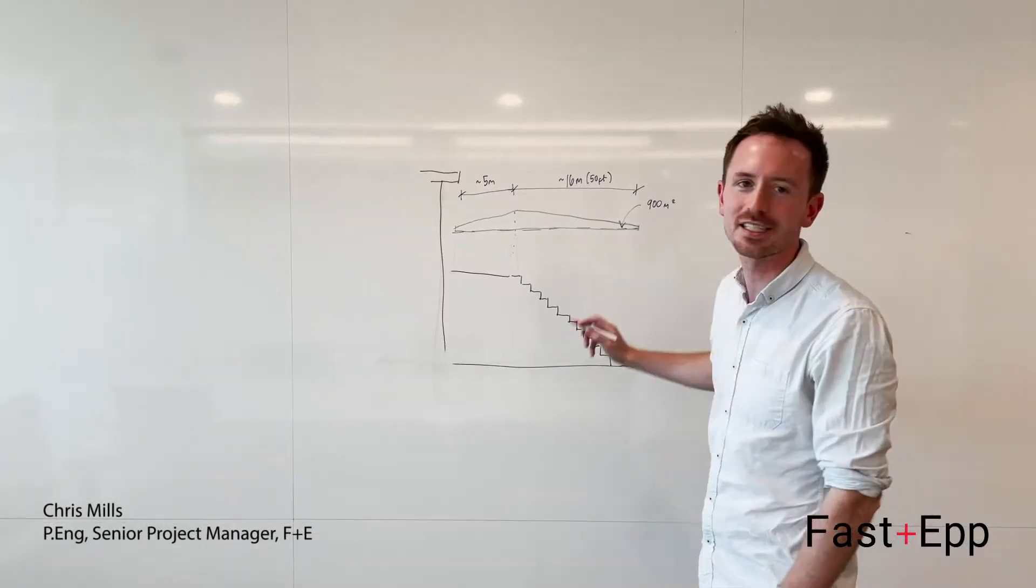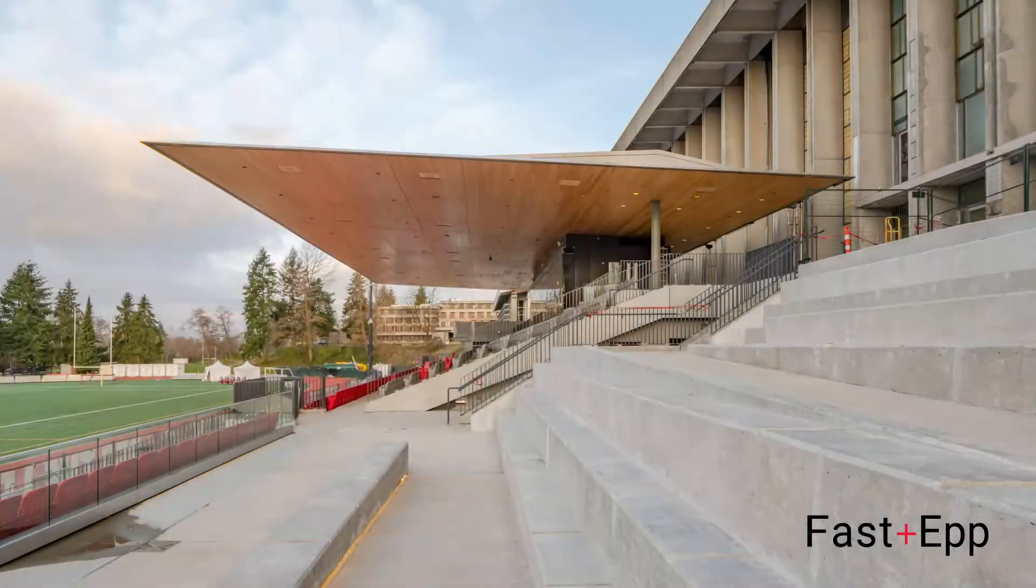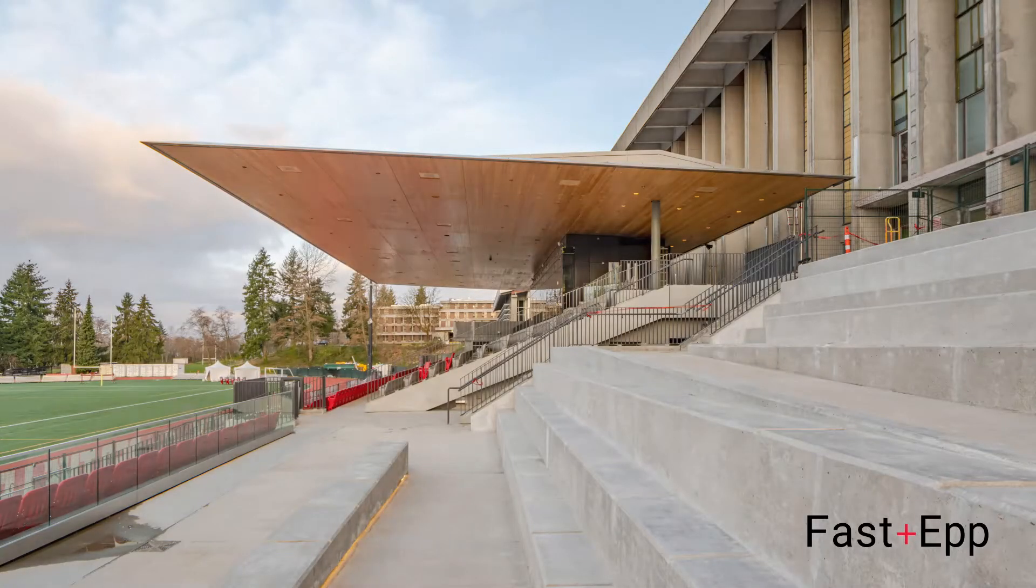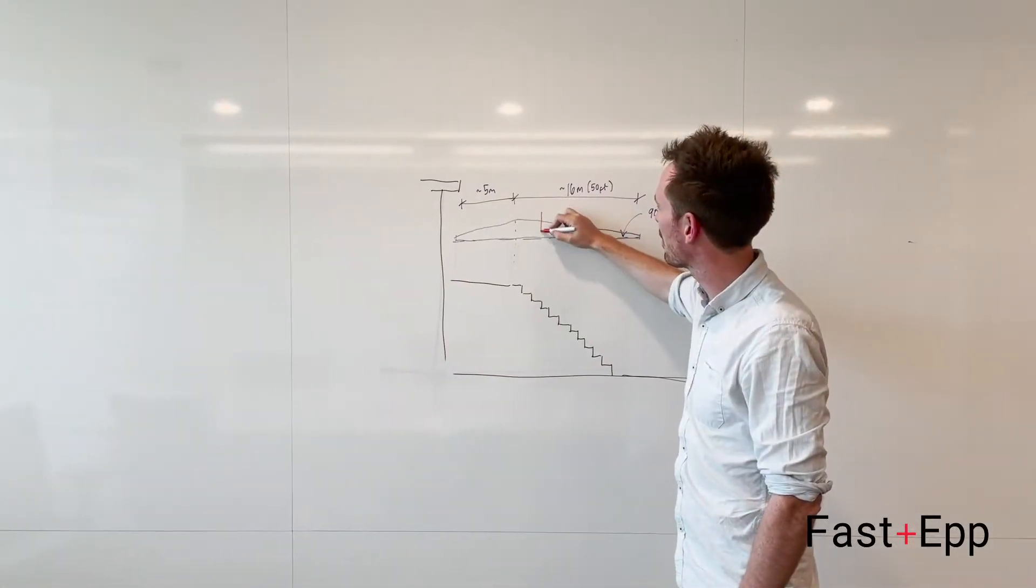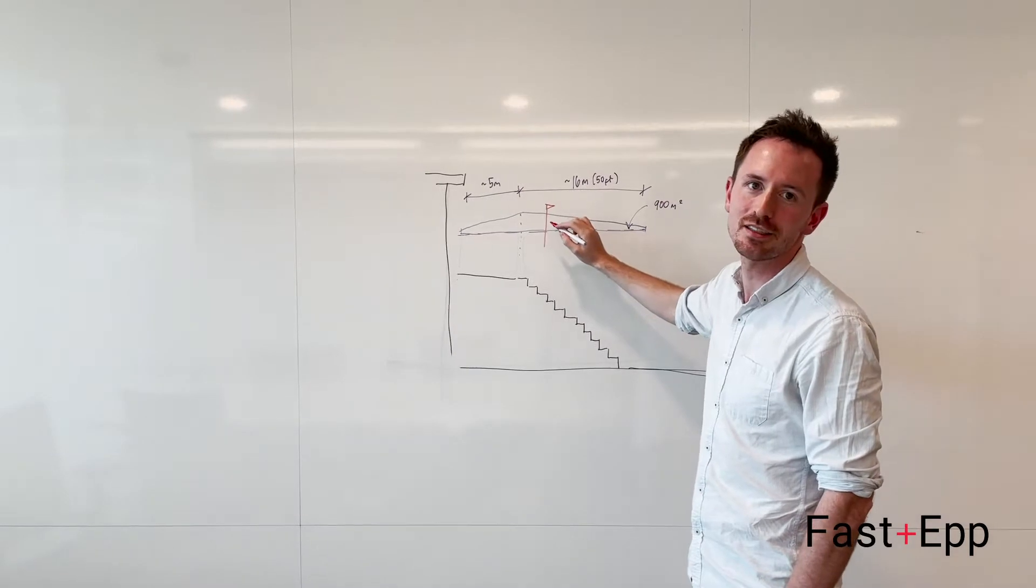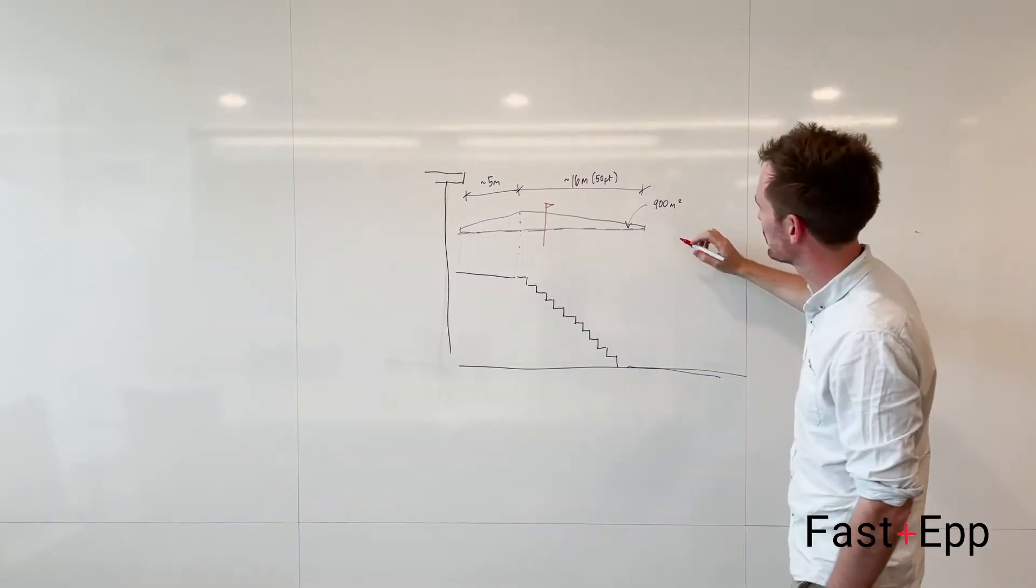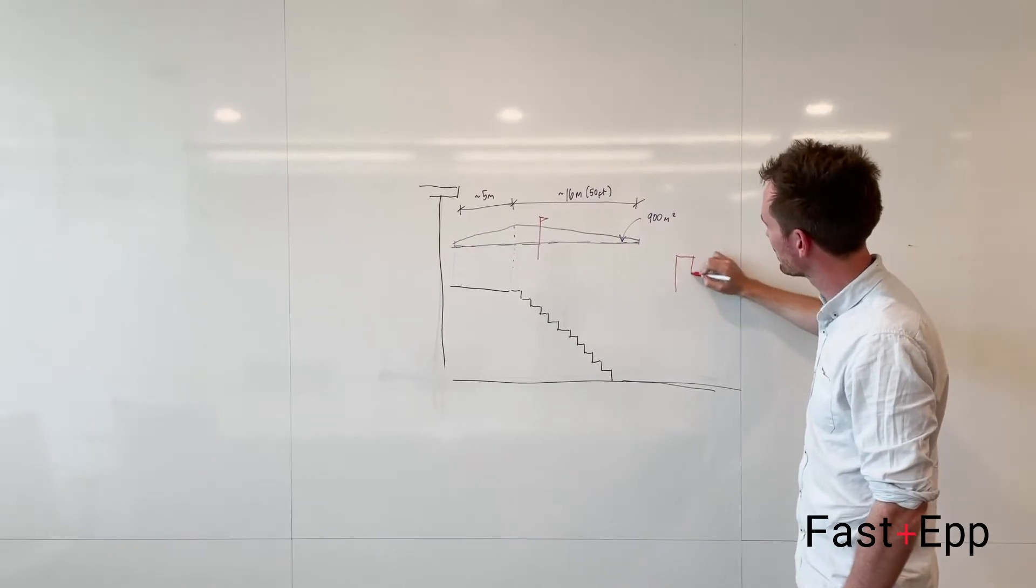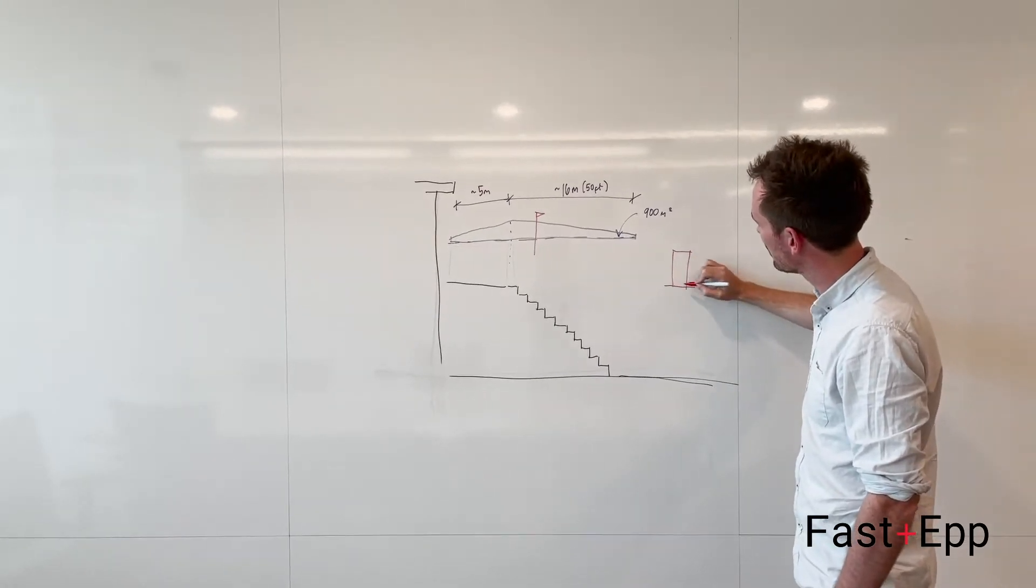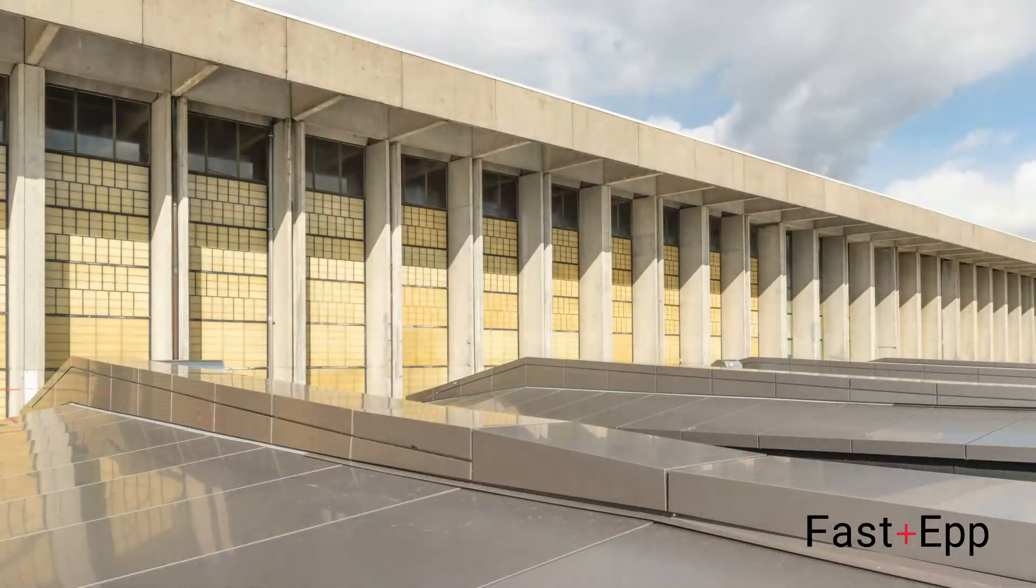One of the key challenges associated with this scheme was how to achieve the continuous CLT soffit. There was a lot of development on how we resolve this section where the steel girder supports the CLT structure below.